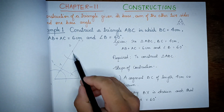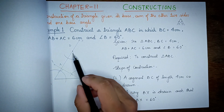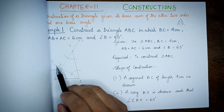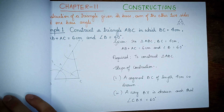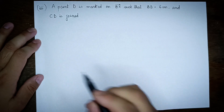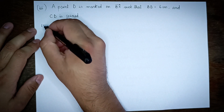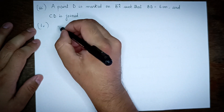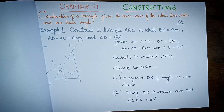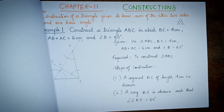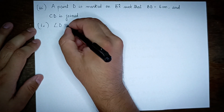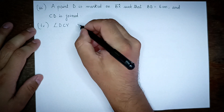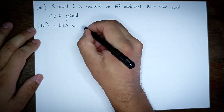Step 4: We draw the perpendicular bisector of DC. Angle DCY is constructed congruent to angle BDC. We will have to bisect angle DCY.